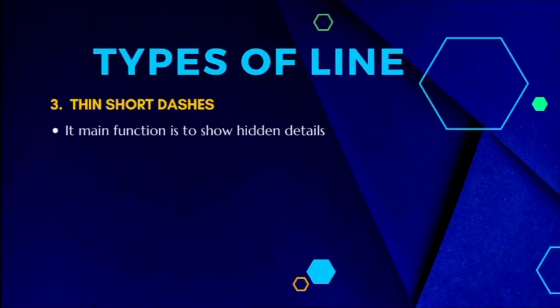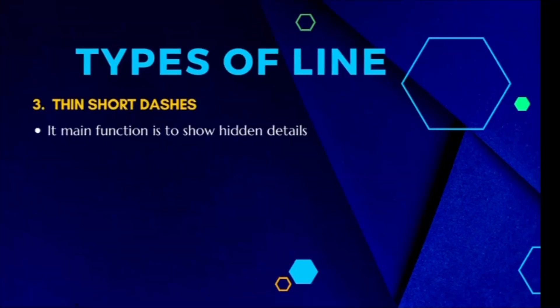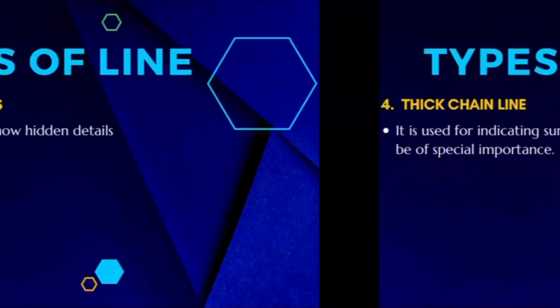The next type of line we have is the thin short dashes. Its main function is to show hidden details. Most times when we want to show something in hidden detail, we make use of thin short dashes.